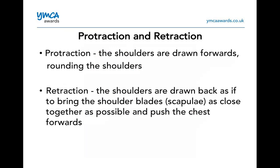Protraction and retraction: protraction is when the shoulders are drawn forwards, rounding the shoulders. Retraction is the shoulders drawn back — bringing the shoulder blades or scapulae as close together as possible and pushing the chest forwards. Roll your shoulders forwards for protraction; rotate the shoulders up towards your ears and back, squeezing the shoulder blades together for retraction. These are really important for training people and doing exercises, as knowing the position helps you engage the muscles more.